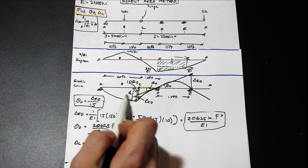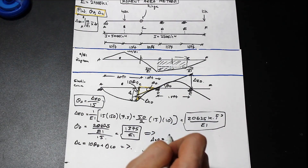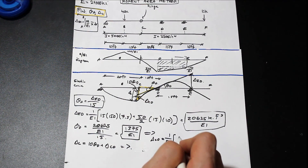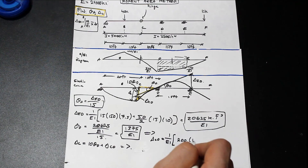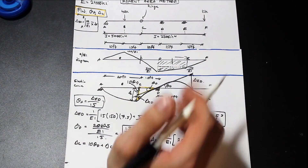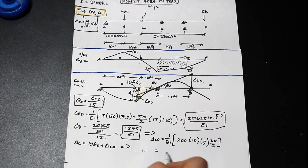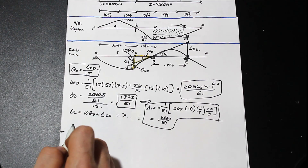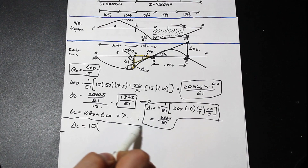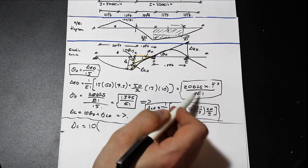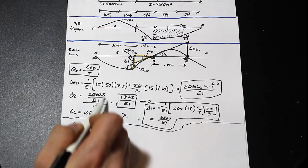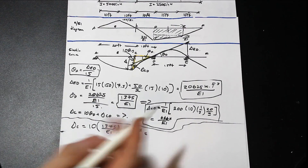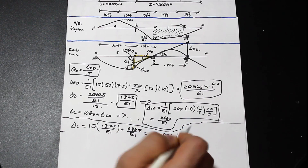For δCD: (1/EI) × [200 × 10 × ½ × (10 × 2/3)] = (1/EI) × [200 × ½ × 10 × 20/3] = 6667/EI. So δC = 10 × (1375/EI) + 6667/EI = 13,750/EI + 6667/EI. Plugging in the EI values gives δC = 0.487 inches downward. That's our first answer.